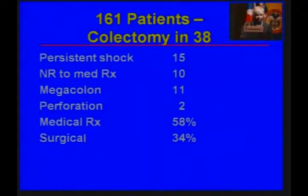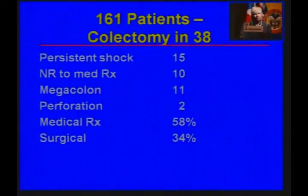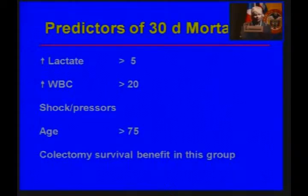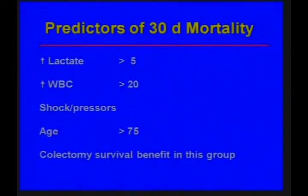The surgical group had an overall 30-day mortality of 34%, while the medically treated group had a mortality of 58%. The predictors of 30-day mortality were a lactate greater than 5, a white blood cell count greater than 20,000, being on shock pressors, and being 75 years or older. These are the patients in whom you want to involve your surgeons sooner rather than later.